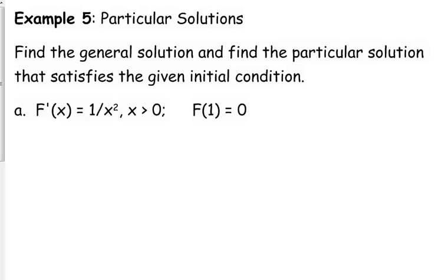Let's first find the general solution, that's what we've been doing. The general solution has the plus C on the end, but then after that we're going to find the particular solution that satisfies this extra piece of information, the F(1) equals 0, that's what we haven't been given before now.